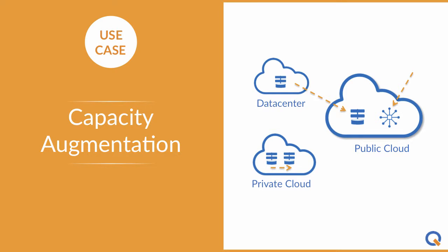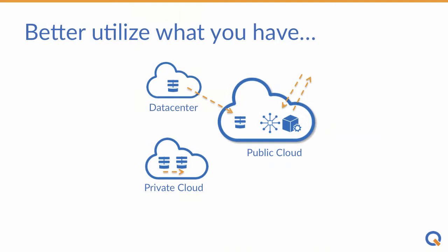Clicker has a great solution that lets you augment capacity both in your data center and the public cloud. One way is to better utilize what you have now, horizontally scaling out and back, turning off workloads when done.